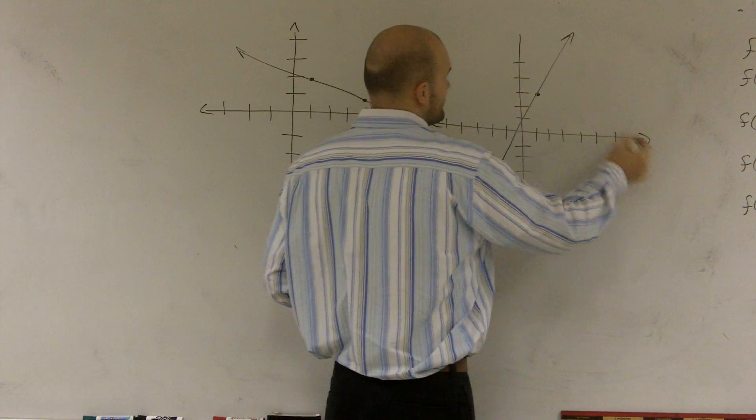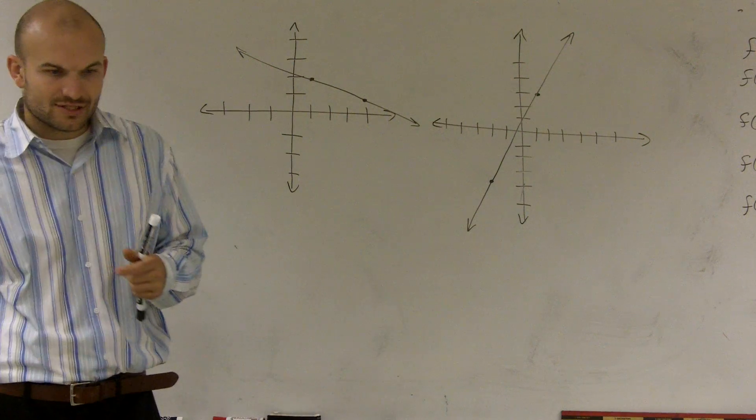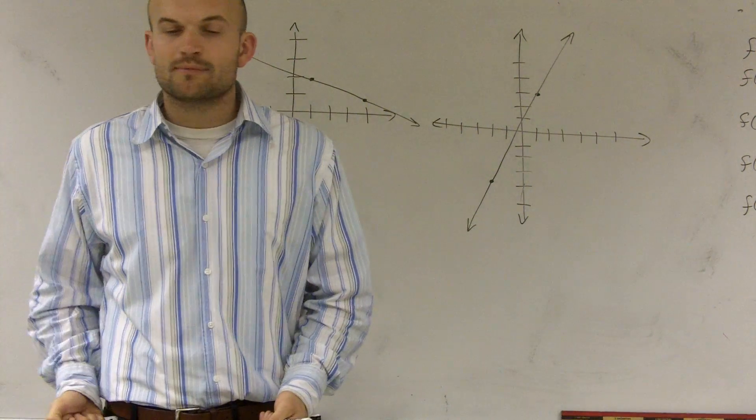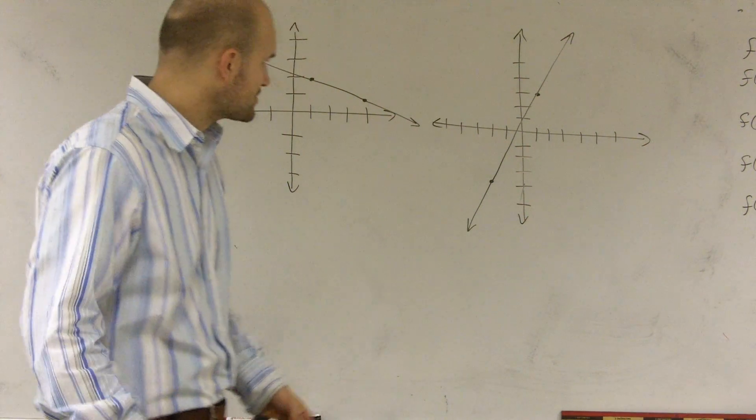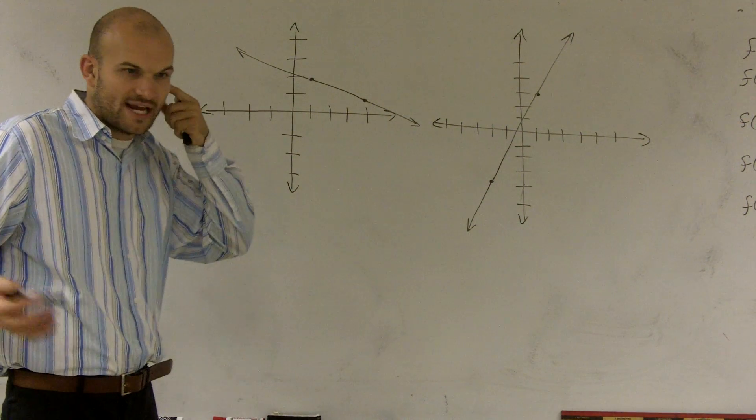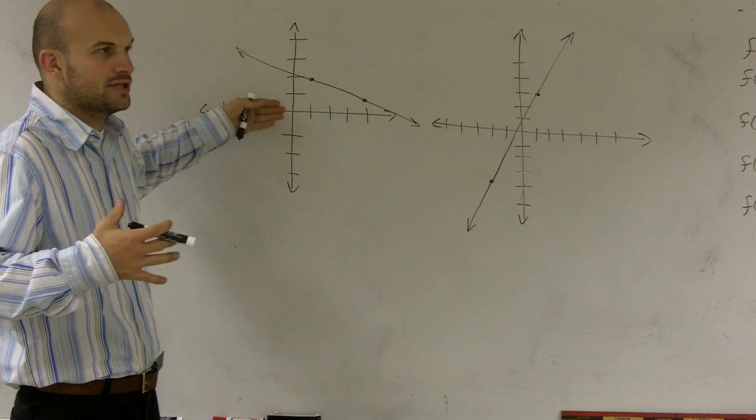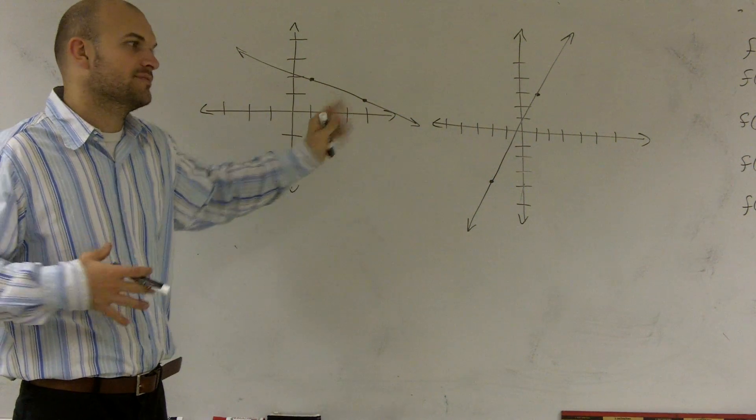So there's a couple things I want to make sure I go over with you dealing with the slope. Remember, the slope is going to be a lot of times called the rate of change. But what it is, it's the change between two different points. If given two points, we need to find what is going to be the change between these two points? What's happening? How am I changing vertically and how am I changing horizontally between the two points?